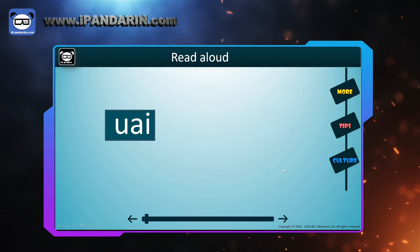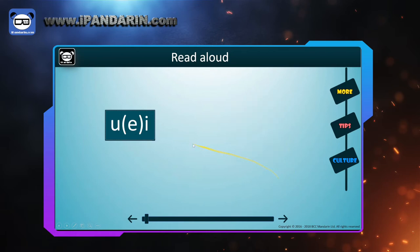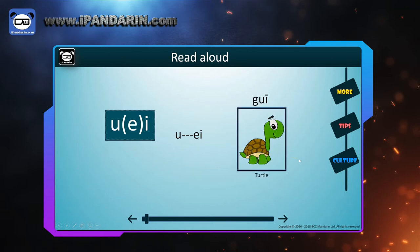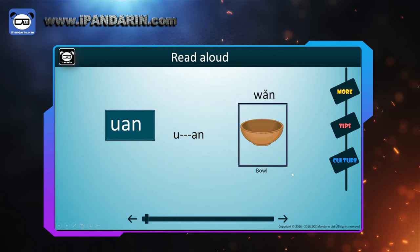UI — repeat after me. And in Chinese, 快 (kuài), which means fast. UAN — repeat after me. And in Chinese, 龟 (guī), which means turtle. UN — repeat after me. And in Chinese, 蚊 (wén), which means mosquito.